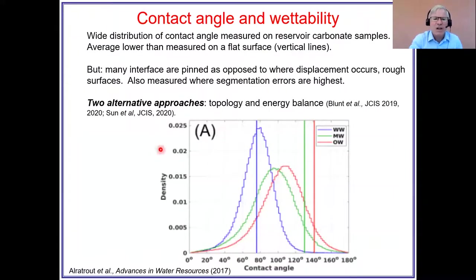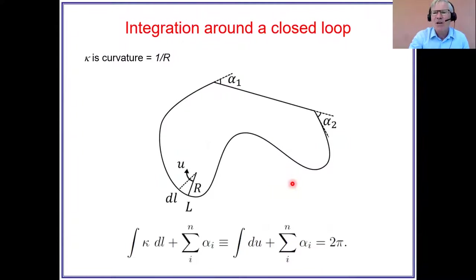So we can do it. Here are some examples showing the frequency of contact angle against the contact angle for three systems with different wettabilities. But we tend to find a range of contact angle and there is a concern that quantitatively this isn't necessarily terribly accurate. So is there another approach? We're going to talk about two approaches, one using topology and one using energy balance that we developed in the last year.